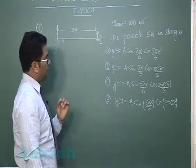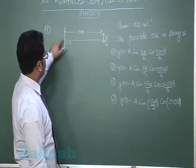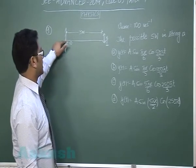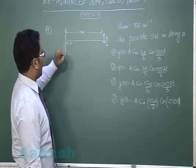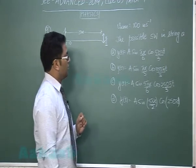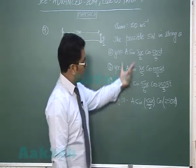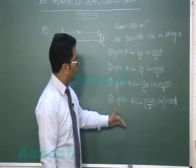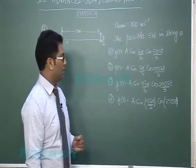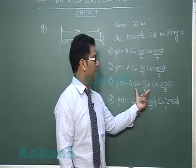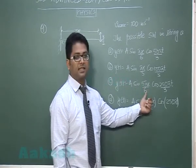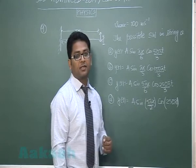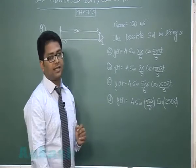You could see the first cross check is this is x equals to 0 so y should always be 0 when x is 0 and you could see sin x is there so the first checking says all possibilities may occur. Had one option been cos 5 pi x by 6 that would be wrong because at x equals to 0 we want y equals 0.